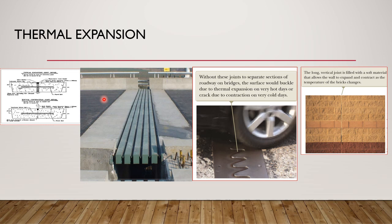When expansion occurs without provision for it, buckling and cracking of concrete happens. We have what are called contraction joints and expansion joints. These are included in civil engineering plans. For example, if a bridge is 50 meters long and it is computed that within that span there will be 1 meter of thermal expansion, that expansion is divided up to compensate for the length of the bridge and to prevent buckling.